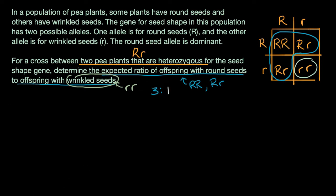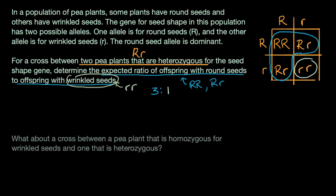Now I have another part of this question asking us: what about a cross between a pea plant that is homozygous for wrinkled seeds and one that is heterozygous? Pause the video again and see if you can have a go at this one.